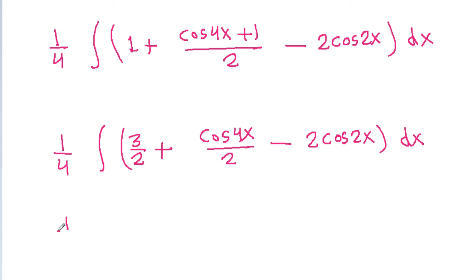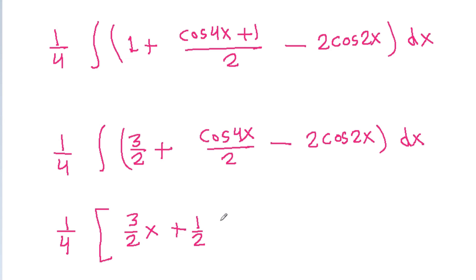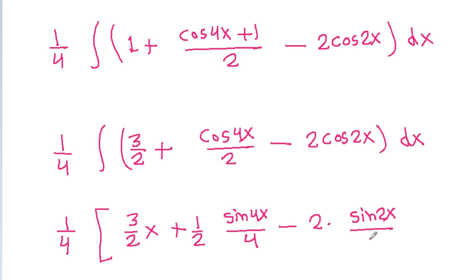We now integrate term by term. The integral of 3/2 is (3/2)x. Since 1/2 is a constant, the integral of cos 4x gives sin 4x / 4, and multiplied by 1/2 gives sin 4x / 8. The integral of cos 2x is sin 2x / 2, so minus 2 times that gives minus sin 2x. There is also a constant c.